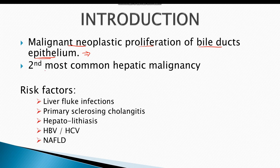Cholangiocarcinoma is the second most common hepatic malignancy after hepatocellular carcinoma. It is more prevalent in endemic areas of liver fluke infections, such as Southeast Asia, including countries like Thailand.